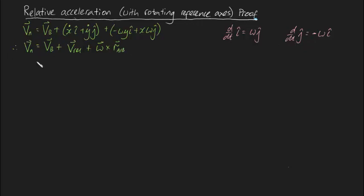So on the left hand side, we will have DDT of VA. And on the right hand side, we will have DDT of VB plus DDT of V rel.